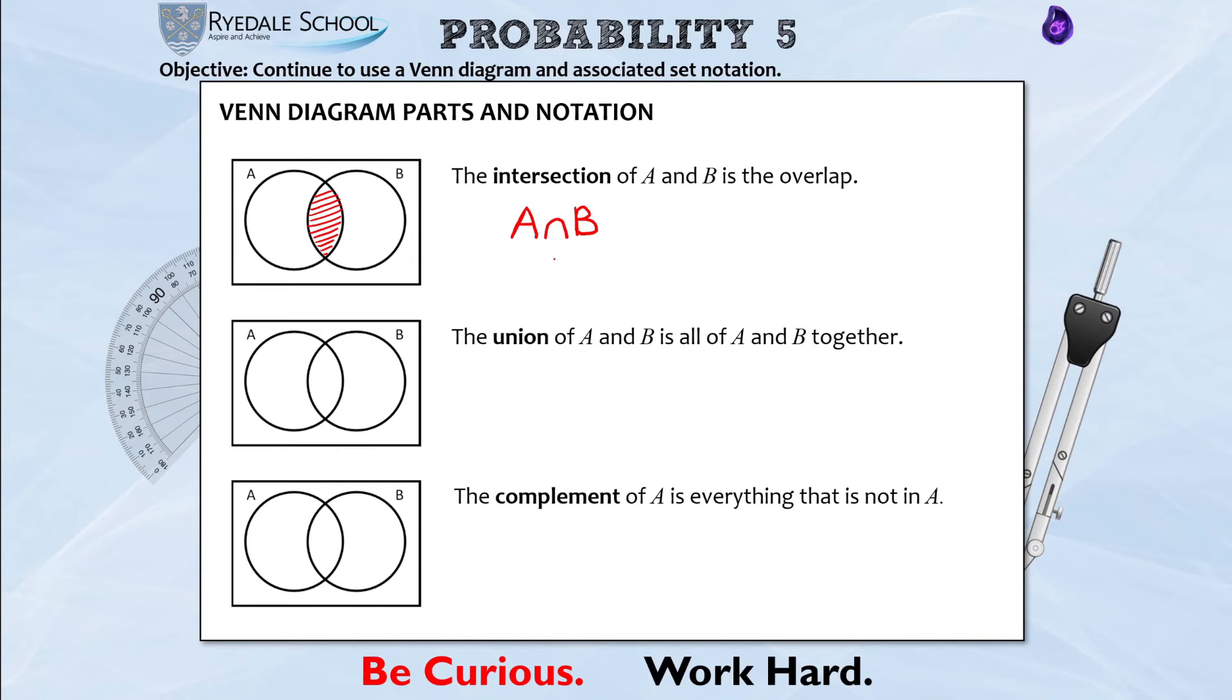Okay, we've got another new word for today, the union. The union of A and B is all of A and B together. And again there's ways of remembering this, the union when two people get married and enter that holy union, that's two people coming together. Okay, so A and B, or the union of A and B, is everything that's in A and B all combined. This one does look like a U, so it's a union ∪ B, all of A and B together.